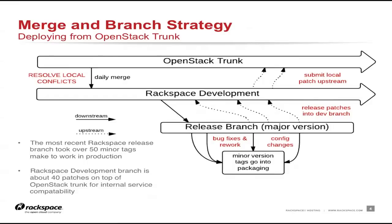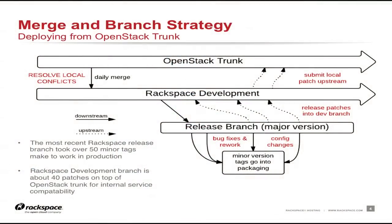This is our branching scheme right now. On a daily basis, we're doing a merge from the OpenStack trunk to our Rackspace development branch, and in that process we deal with any merge conflicts we encounter. Once we're ready for a deployment, we cut a branch with a major release version so we can do bug fixes or patches without stopping the daily merge into our development branch. Any changes we need to apply go to the release branch, we tag it for a new build, then roll those changes back into our development branch.